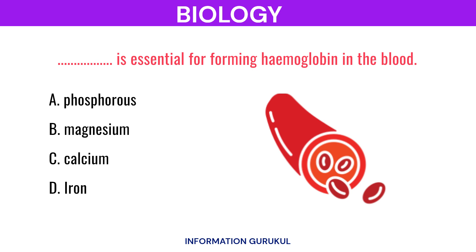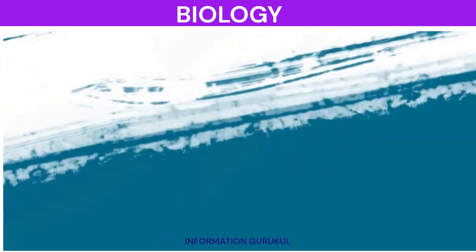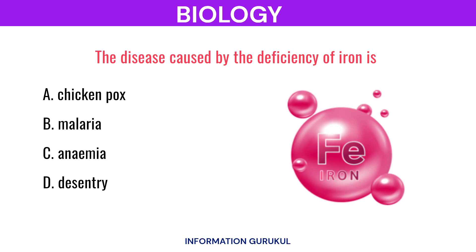What is essential for forming hemoglobin in the blood? Iron. The disease caused by the deficiency of iron is Anemia.